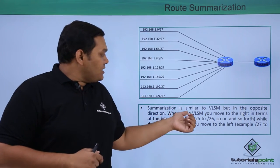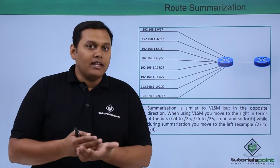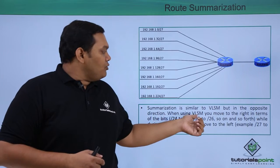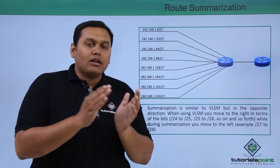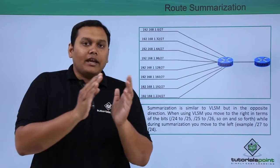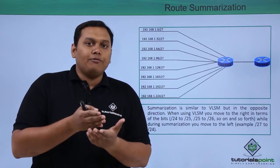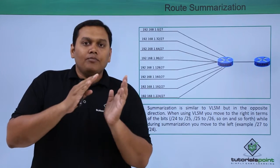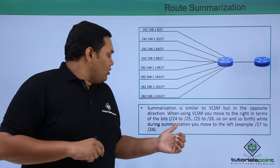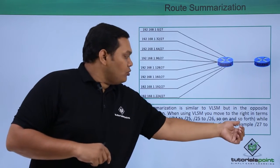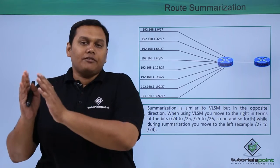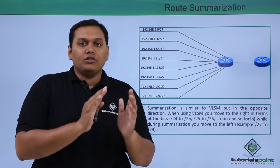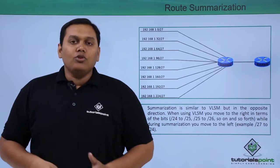Summarization is similar to VLSM — variable length subnet mask — but in the opposite direction. When you use VLSM, you move from right to left, meaning from /24 to /25 to /26, and so on. With summarization you move to the left, that means from /27 to /24 to /21, going back to the base. So it is exactly opposite to VLSM.